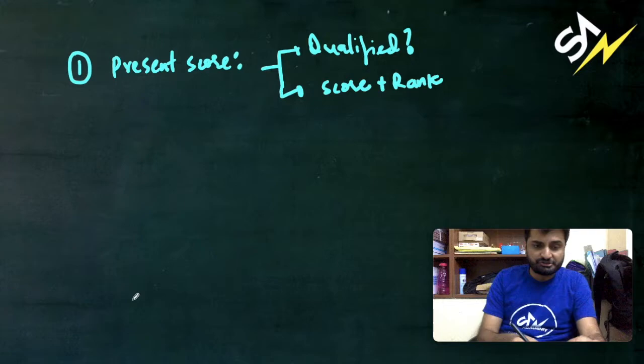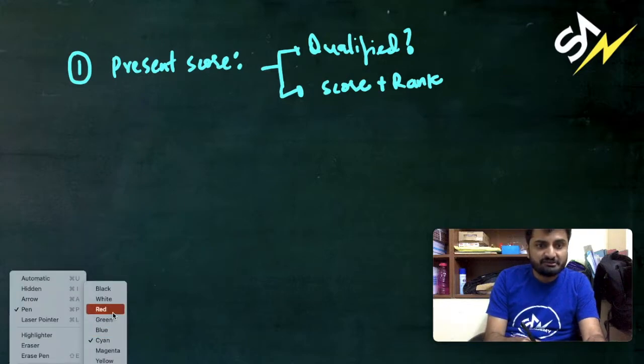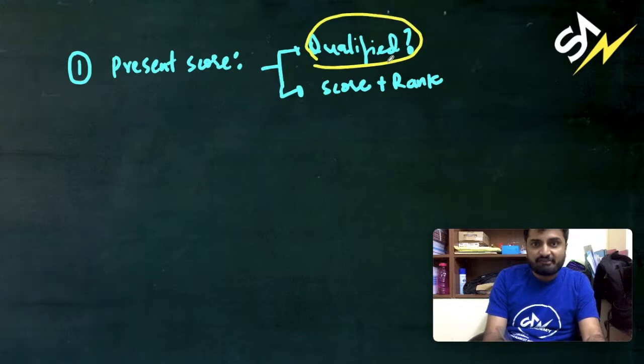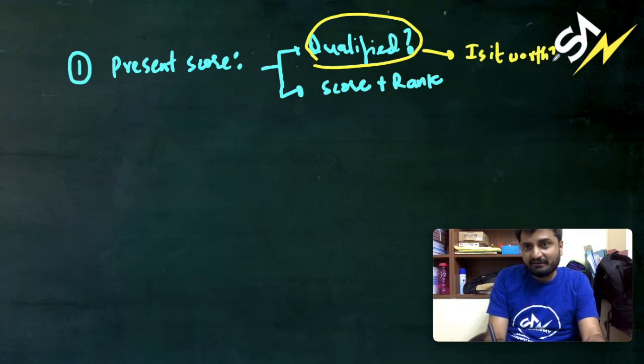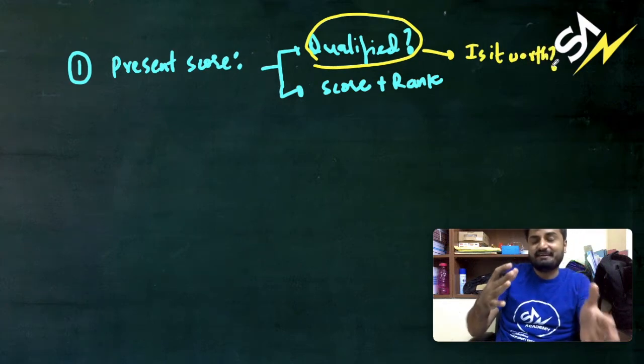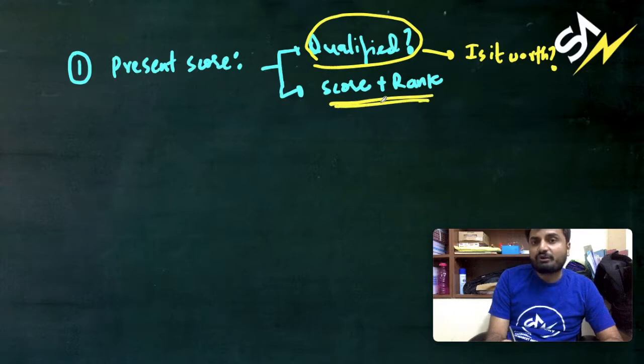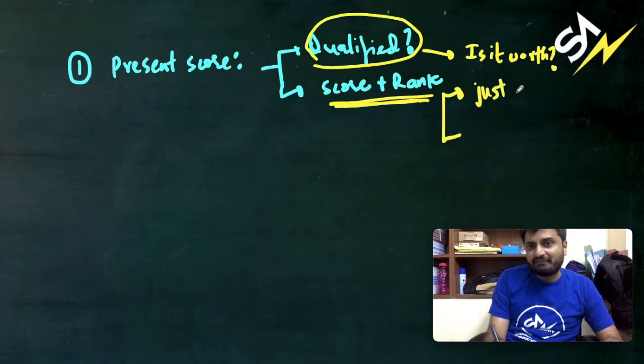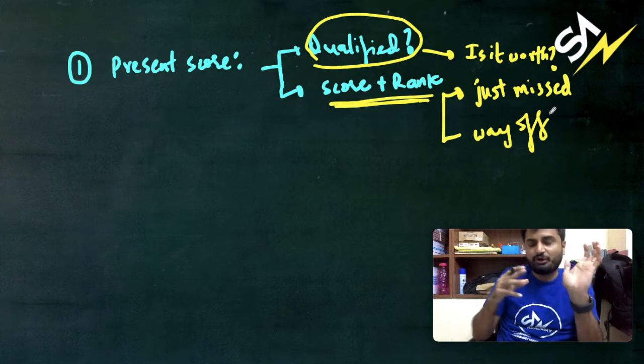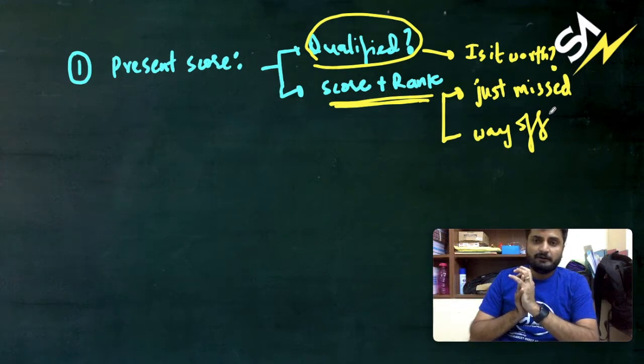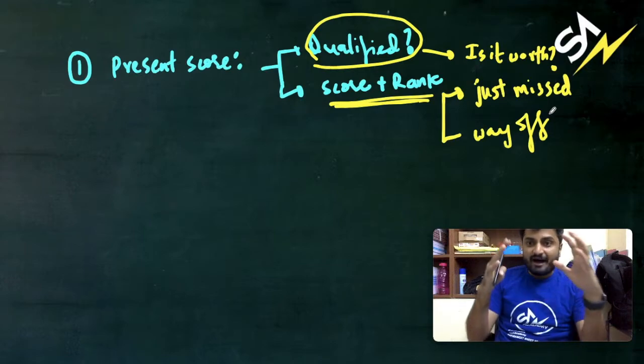But if you haven't qualified for the examination, you need to ask yourself a valid question which is: is it worth missing an academic year to get a seat in a college? And if you have qualified, the next thing you have to look at is the score and the rank. Even in the score and the rank, some students might have just missed the cutoff to get into the colleges or some students were way off the cutoff, that means they would have just qualified which would not actually be enough to get a seat in a good college.